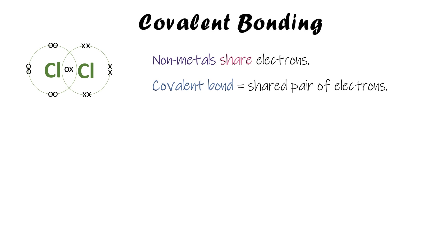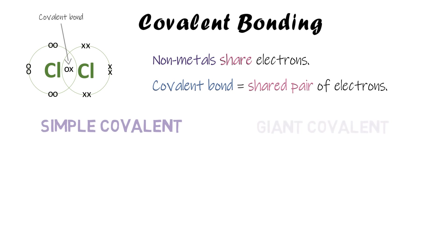This shared pair of electrons is a covalent bond and it joins the two atoms together. It's a very strong bond and it holds them together. The xo in the middle represents the shared pair of electrons, and that is the covalent bond between the two atoms.